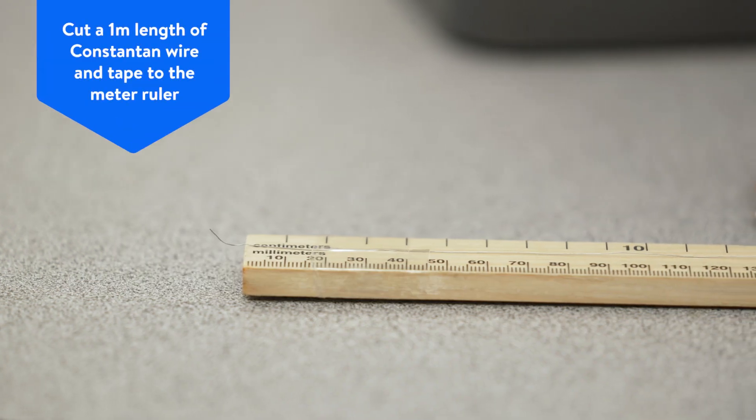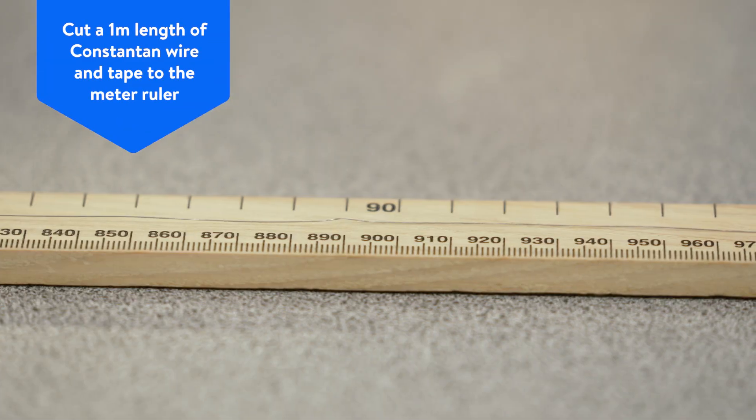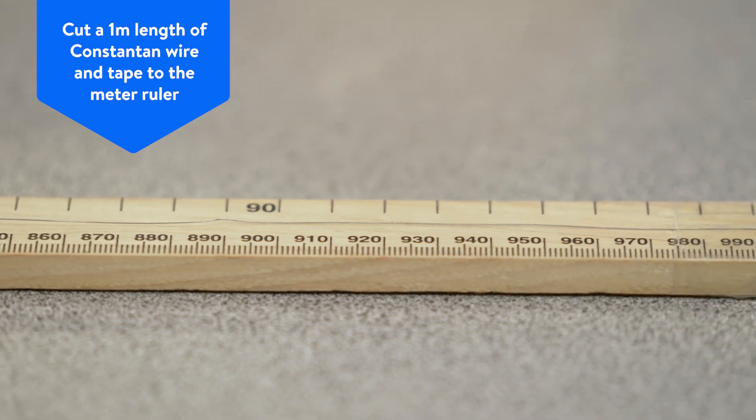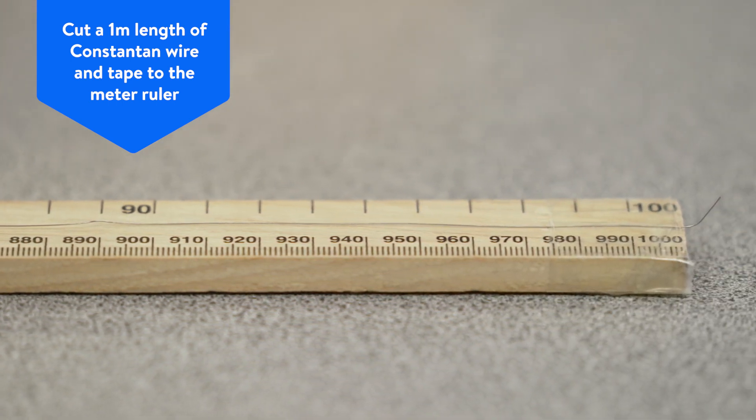Cut a 1 meter length of constantan wire, leaving a little extra at each end in order to be able to attach a crocodile clip, then sellotape the wire to the meter rule.